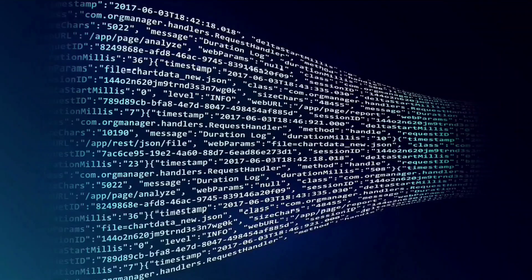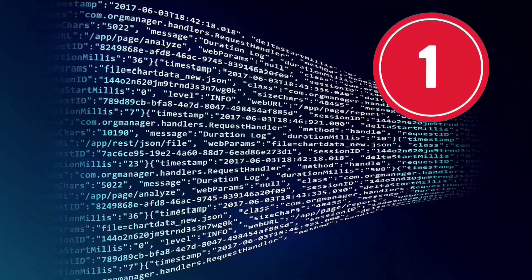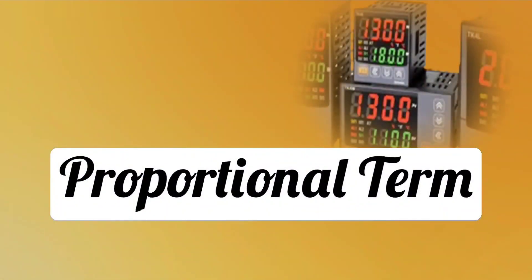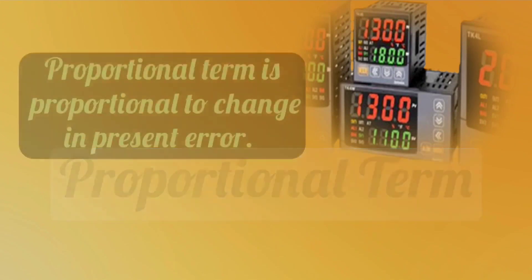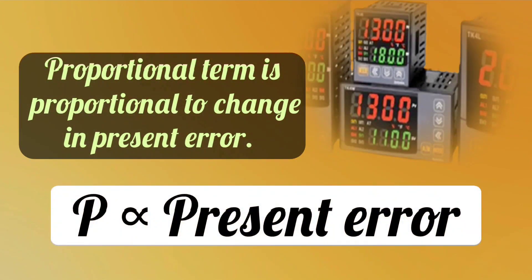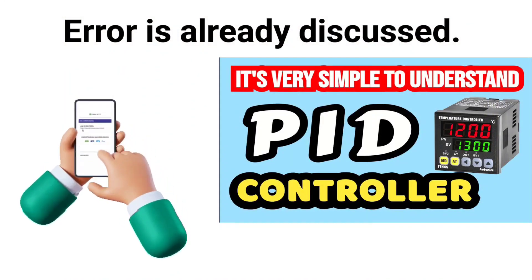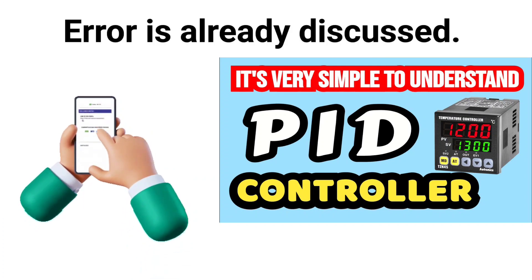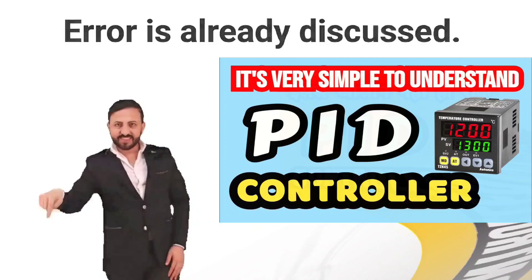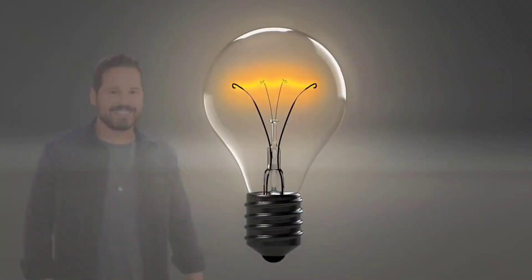Let's discuss. First of all, we will see P for proportional term. The proportional term is proportional to the change in the present error. We have discussed the error in the previous video. Those who have not seen it can see it. Link will be found in your description. Let us understand further.